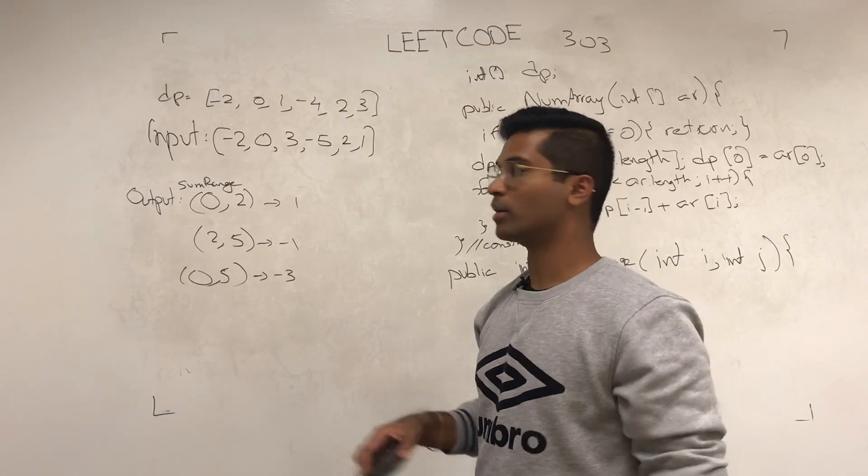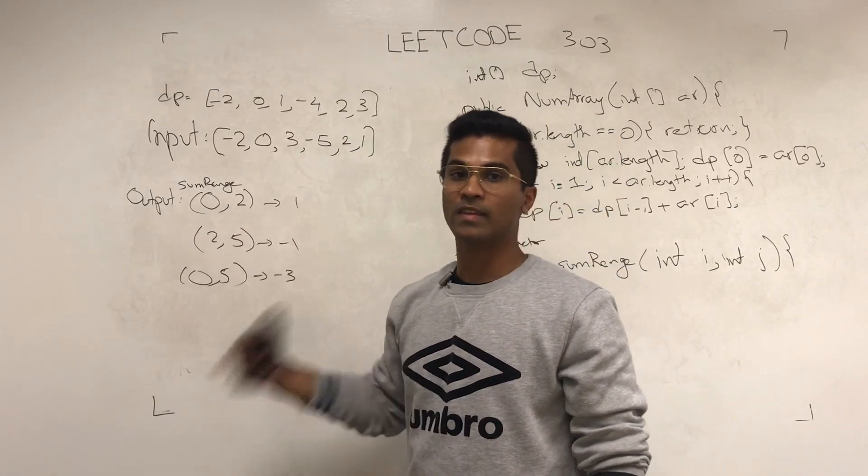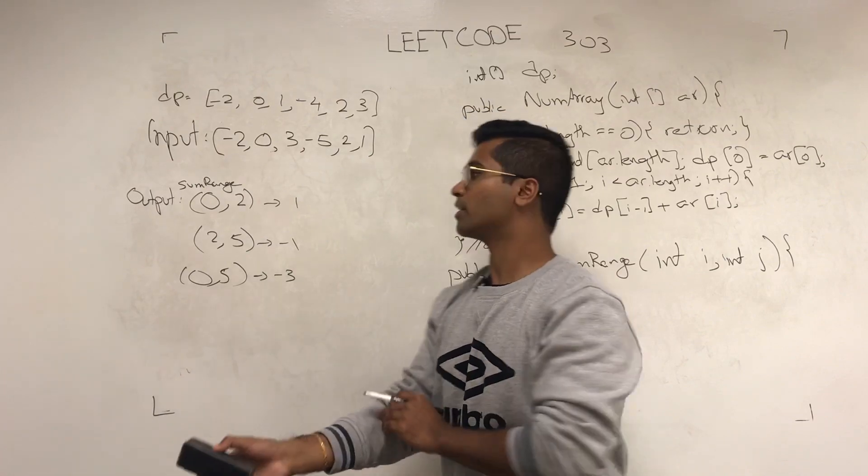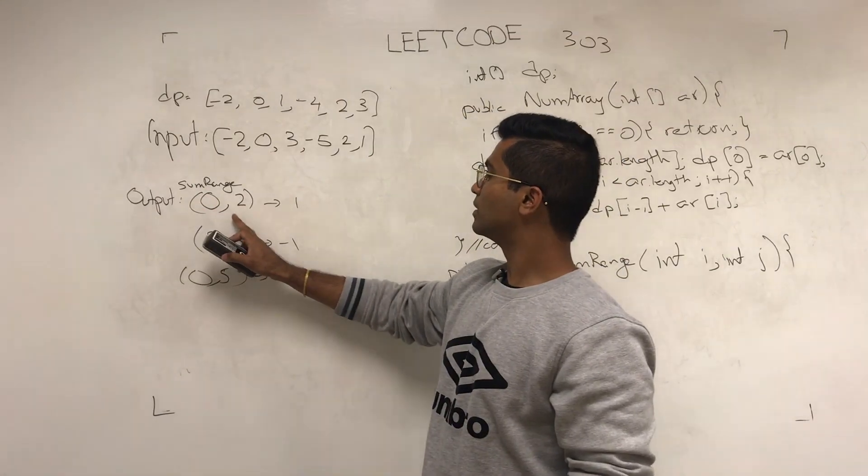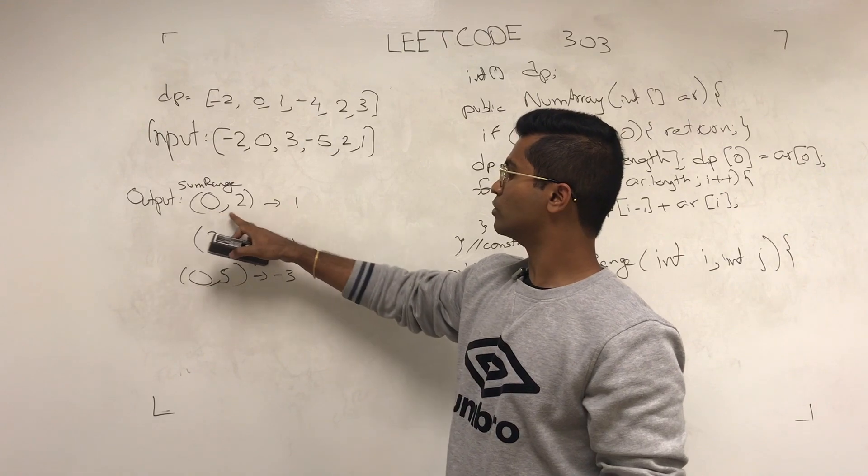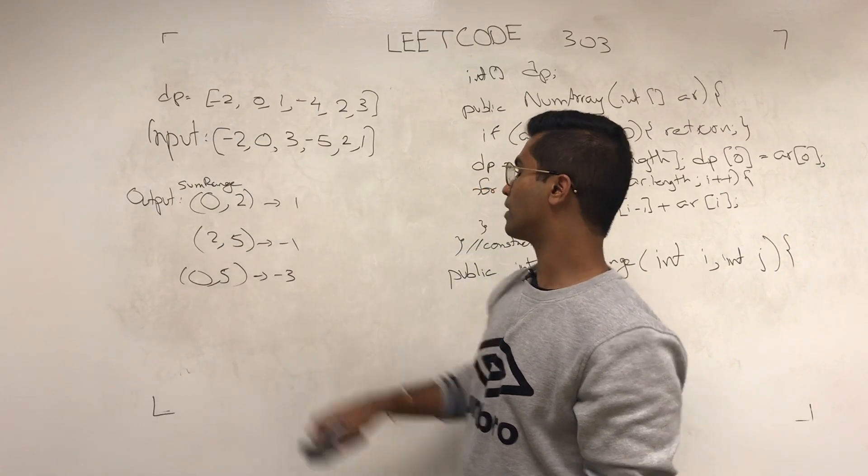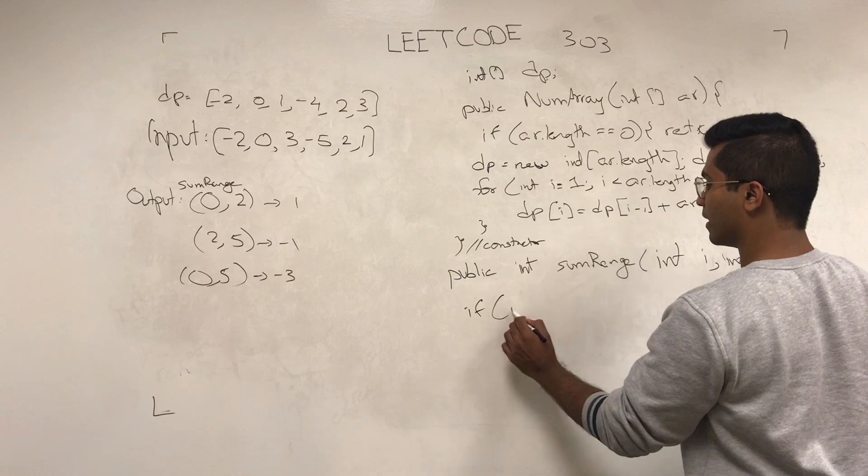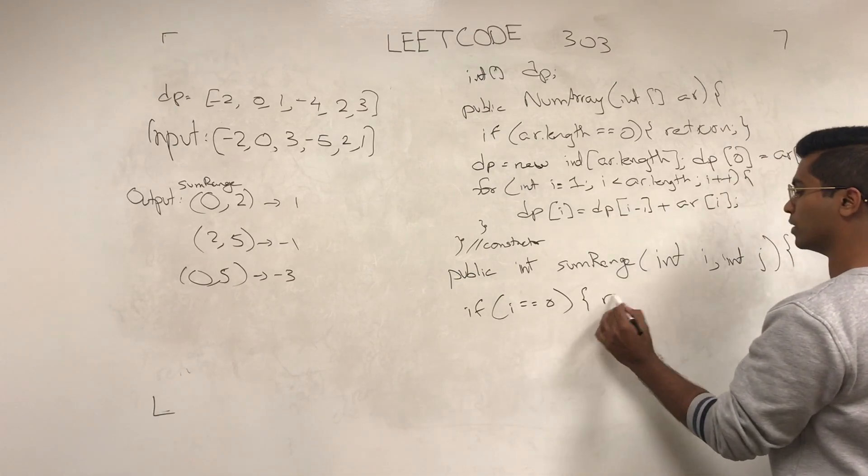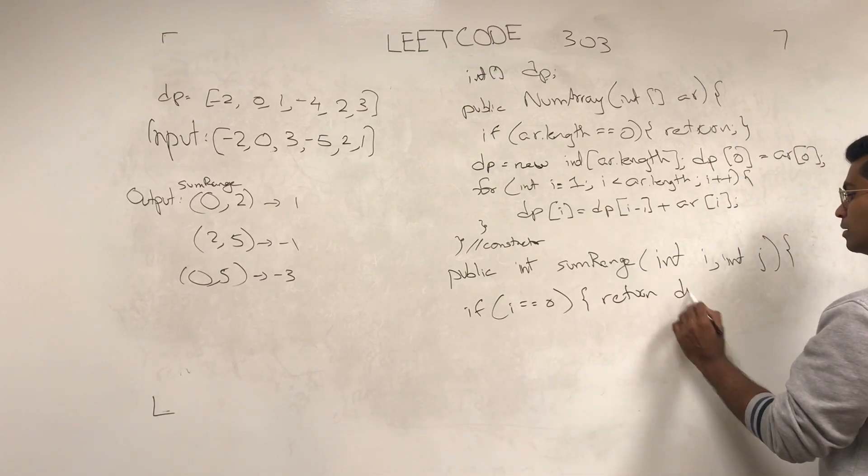So there's going to be one edge case where the i that they give is 0. In that case, all we do is return DP[j]. So DP from 0 to 2 is going to be DP[j], which is 1. So if i is 0, we return DP[j].